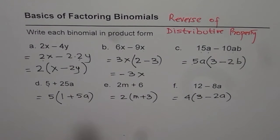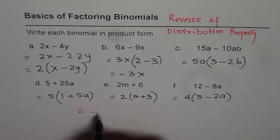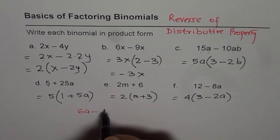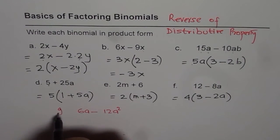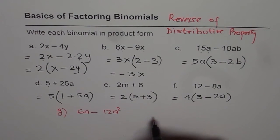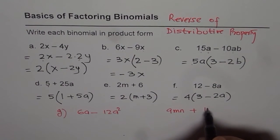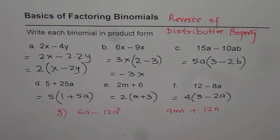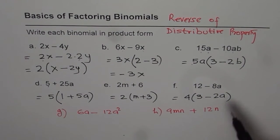Here are two practice questions for you. Factor 6a minus 12a squared, and 9mn plus 12n. Try to factor these two on your own following the method learned. I hope that helps. Thank you and all the best.